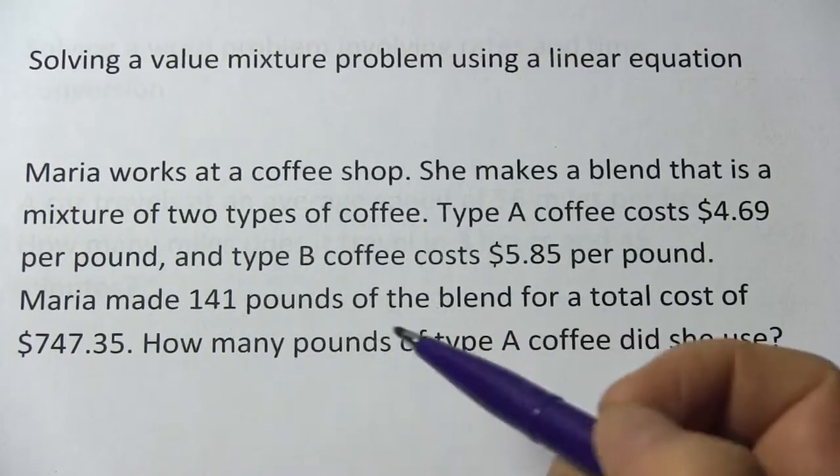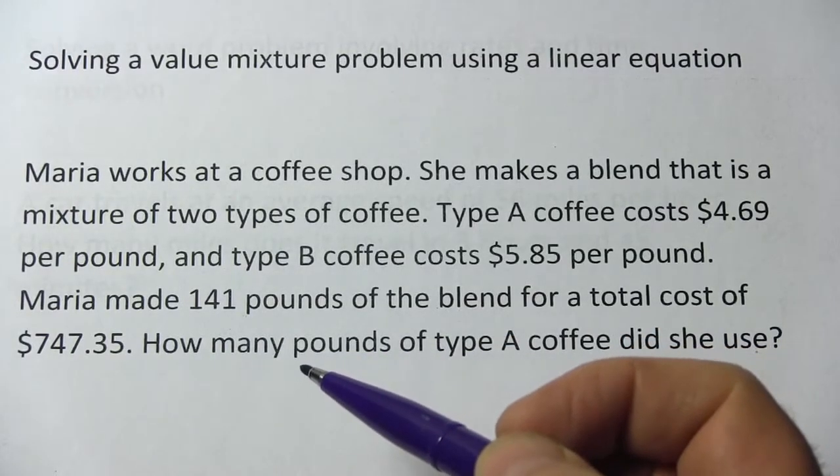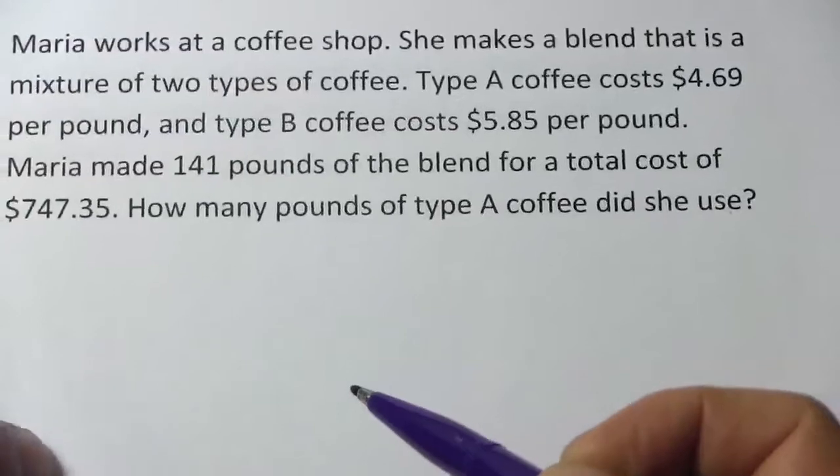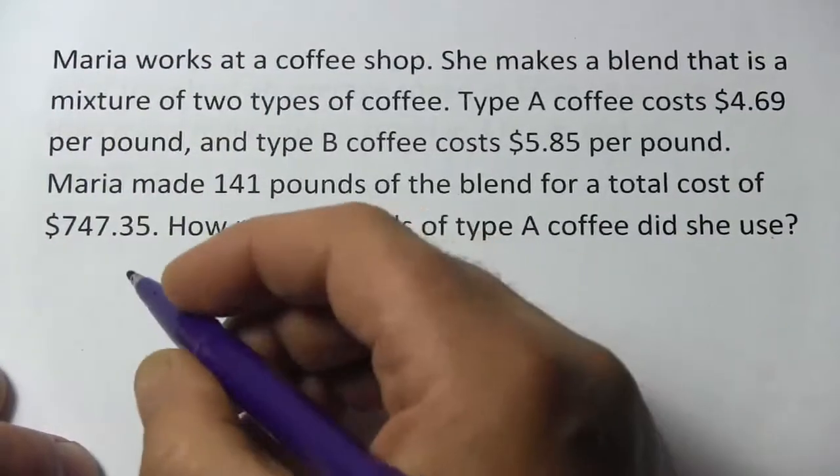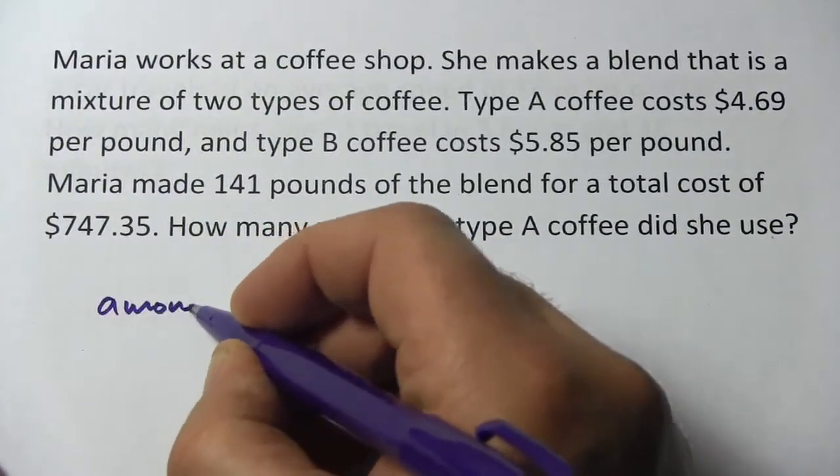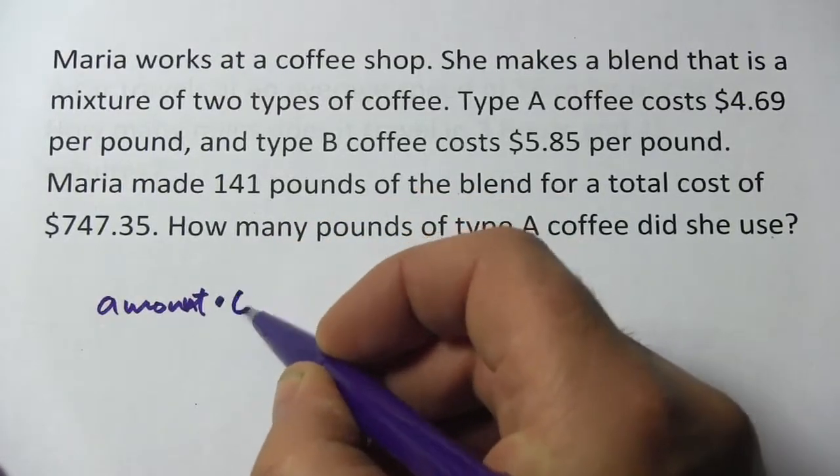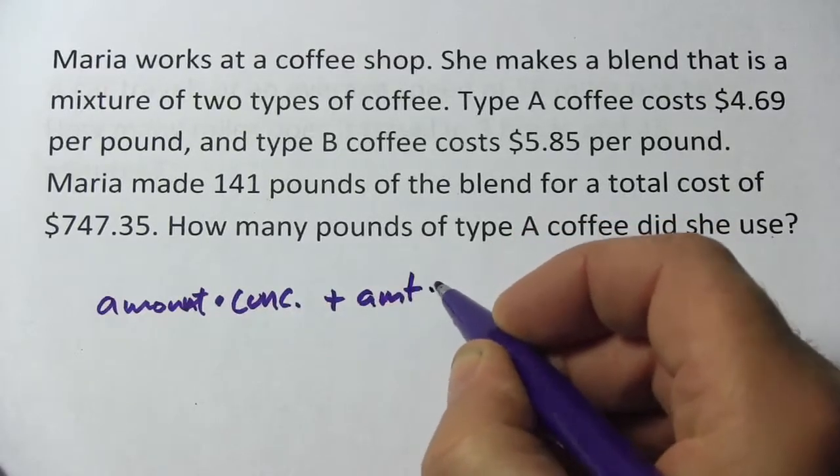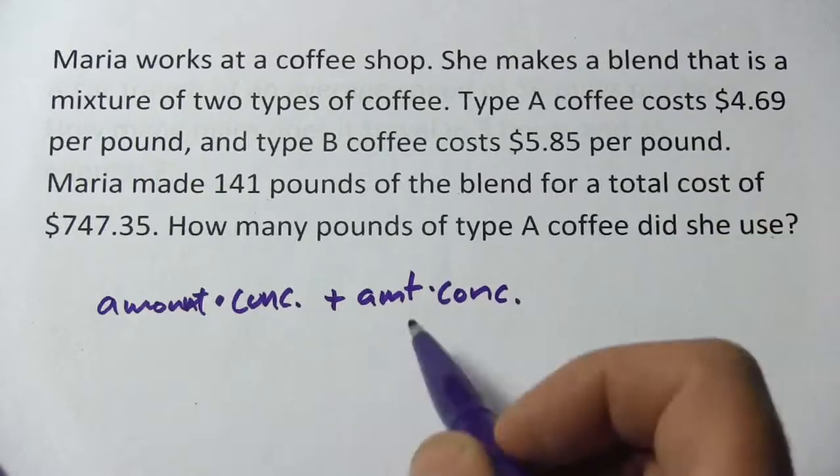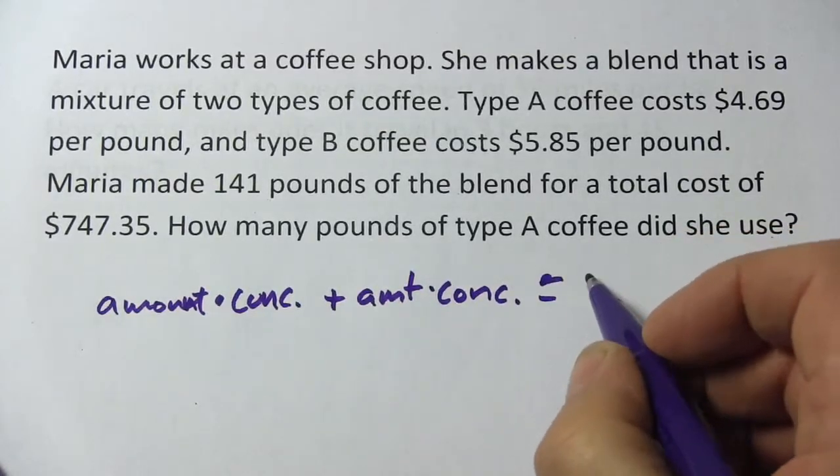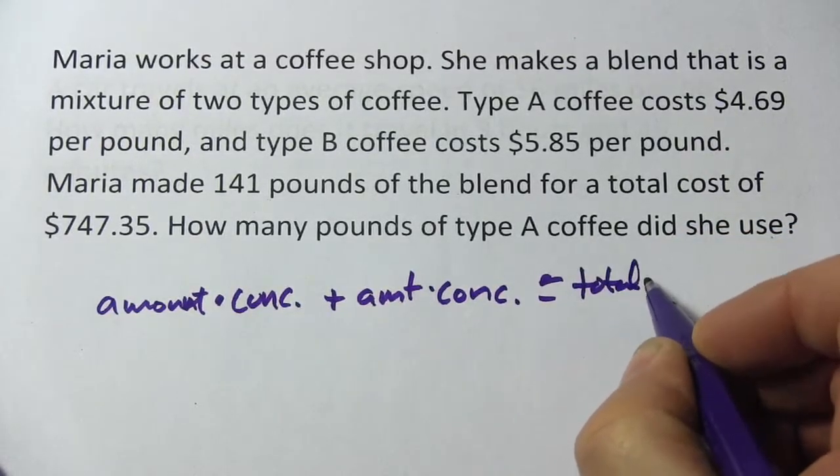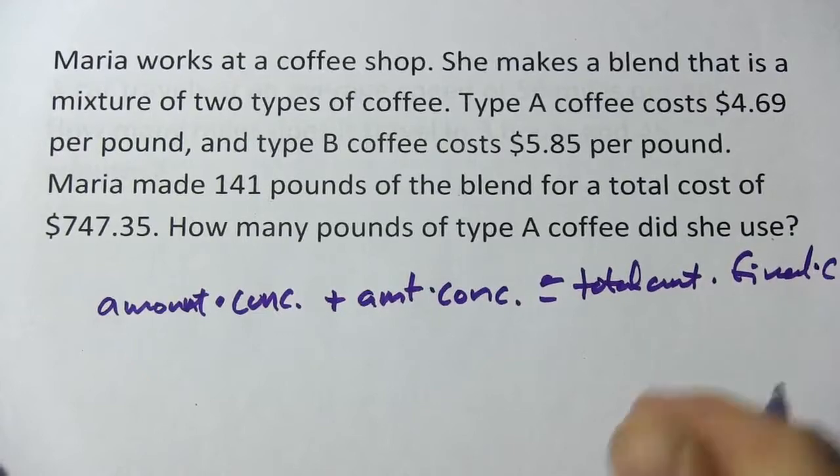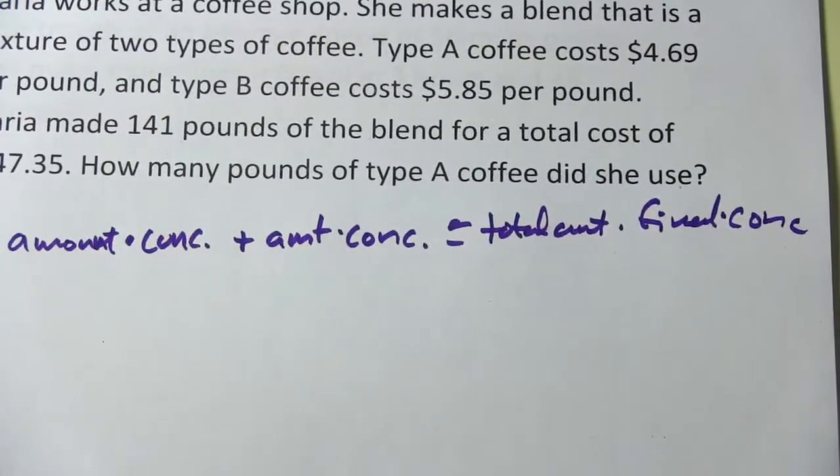Here we have a word problem that deals with mixtures and these can be tricky problems. We need to write an equation for this and then try to solve it. Most often with a mixture problem, you'll see it in this form: there'll be an amount of substance one times a concentration added to an amount times a concentration of substance two, so two different things you mix together, and they're going to equal the total amount times the final concentration. That's the general formula for a mixture problem like that.